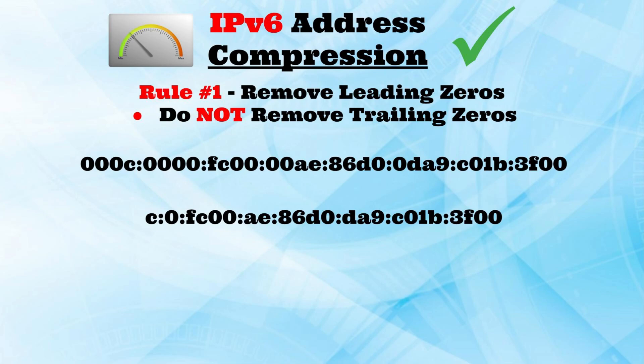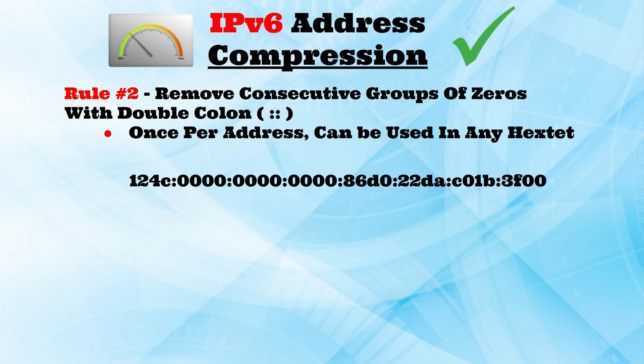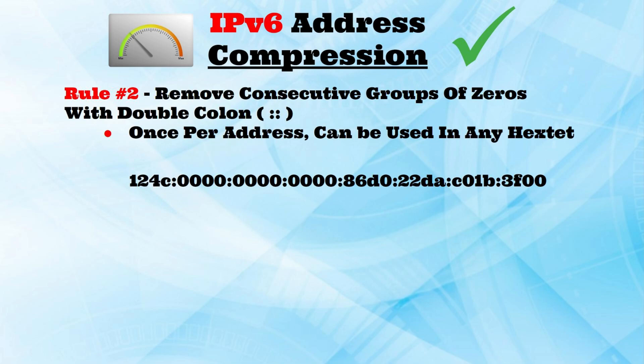Let's move on to the second compression rule with a new IPv6 address. Rule number two is to remove consecutive sections of zeros with a double colon. This can be used only once per address and can be used anywhere in the address. In this address, you see three consecutive groups of zeros, which meets the criteria of rule number two, allowing the groups of zeros to be replaced with the double colon.